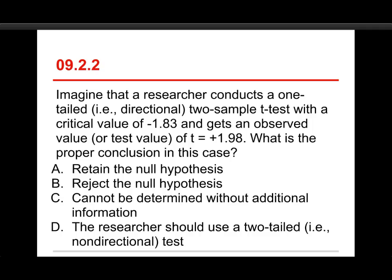Question two: a researcher conducts a one-tailed (directional) two-sample t-test with a critical value of minus 1.83, and gets an observed value of t equals plus 1.98. What is the proper conclusion? The answer is to retain the null hypothesis. The researcher specified a one-tailed test with the critical value on the negative side, meaning they're looking to see if the sample value falls below that. Although the absolute value of the cutoff is 1.83, the obtained value is positive 1.98, placing it on the wrong side.